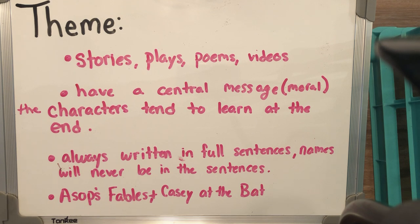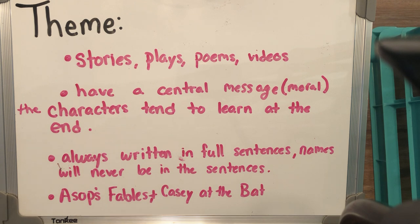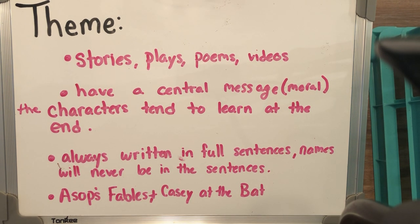For example, we have Aesop's fables and Casey at the Bat. We read a bunch of different fables and we did Casey at the Bat, which did have a theme to it. The hardest part is really figuring out how to determine what the theme is, and you'll watch a video after this to help you figure out some clues and ways to kind of work through it.